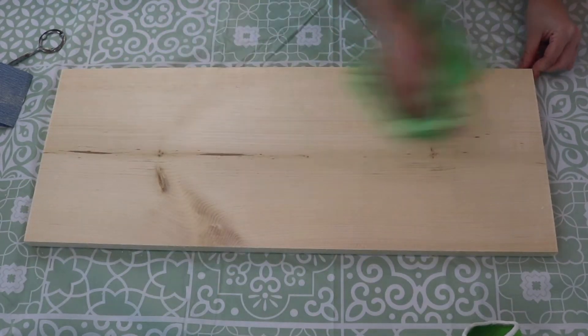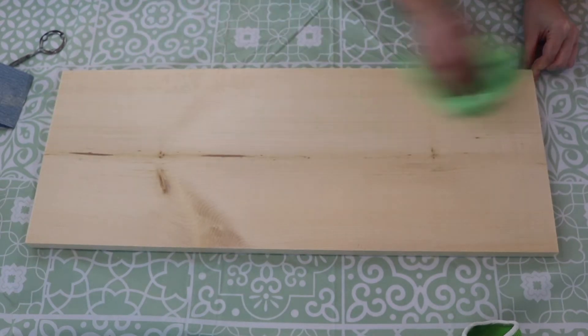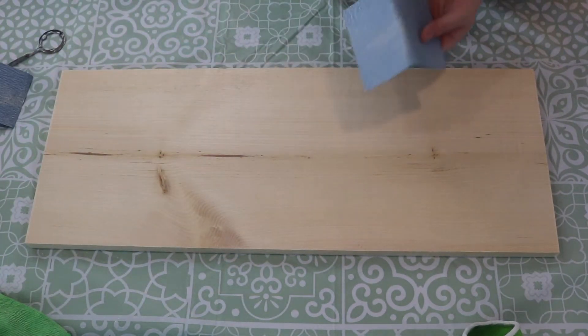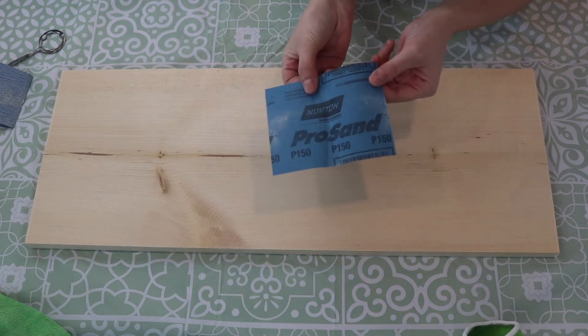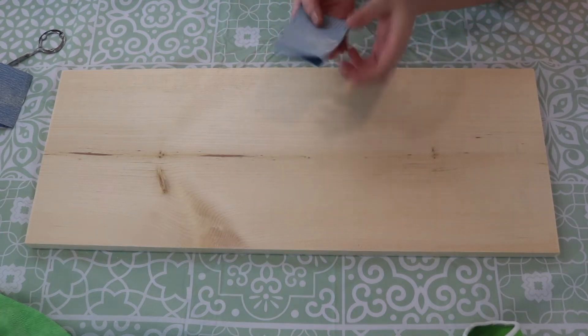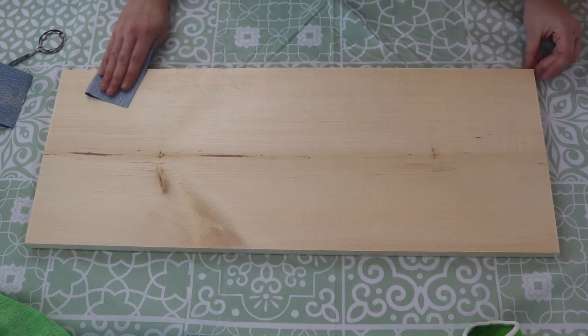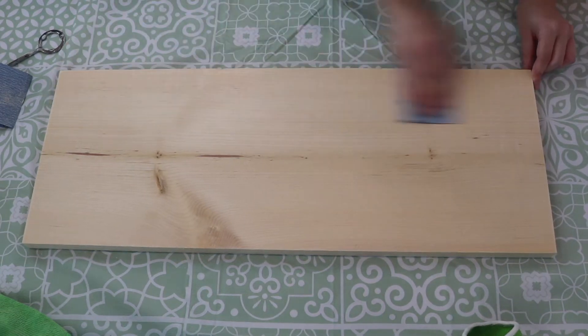Give it a quick wipe, then take a 150 grit sanding sheet and fold it up so that it fits nicely in your hand. You can go along the whole thing with the grain again.